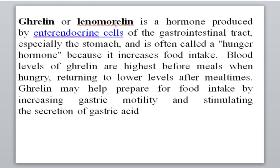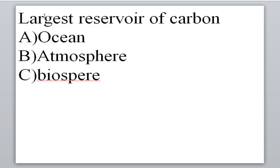Next is a question about ghrelin, also called linamorelin. It is a hormone produced by antero-endocrine cells of the gastrointestinal tract, also called the hunger hormone. It is responsible for increasing food intake. Blood levels of ghrelin are high before meals when hungry and return to lower levels after meals. Ghrelin helps prepare for food intake by increasing gastric motility and stimulating secretion of gastric acid.